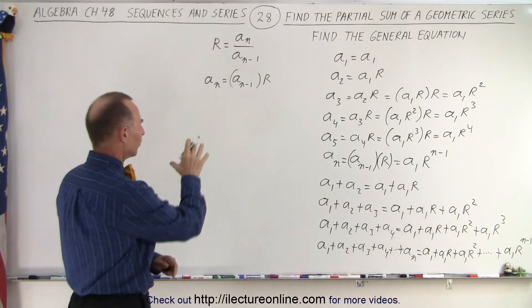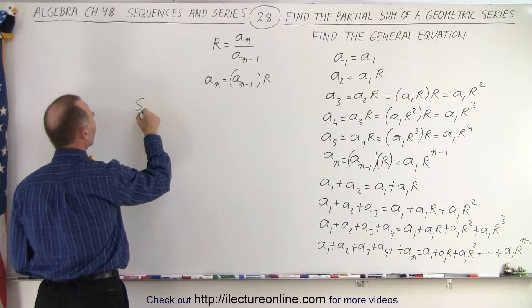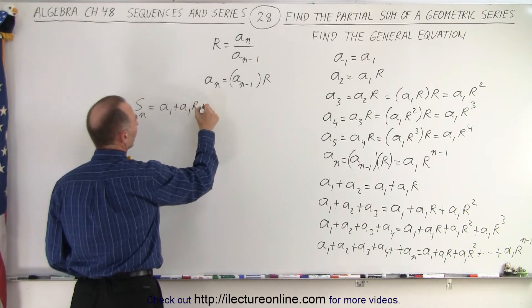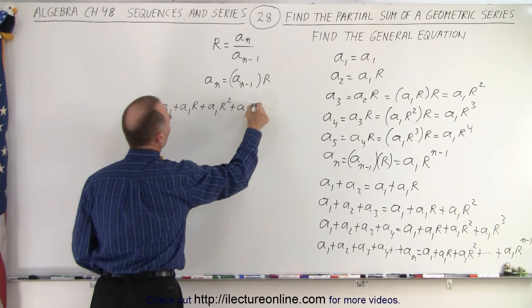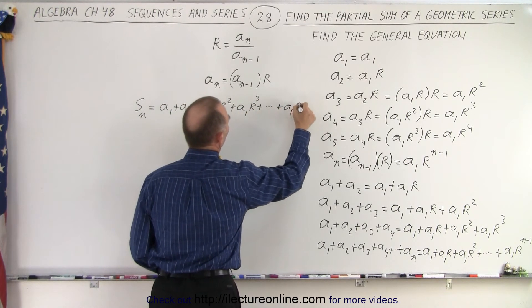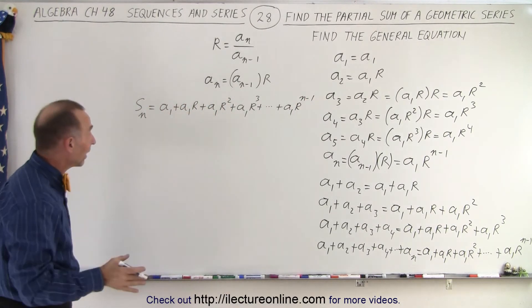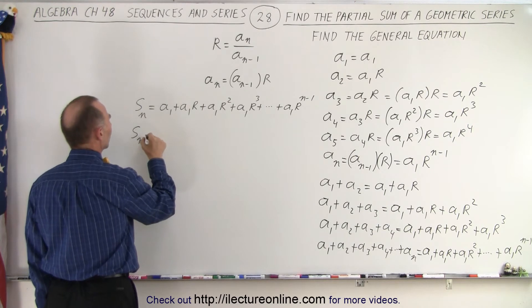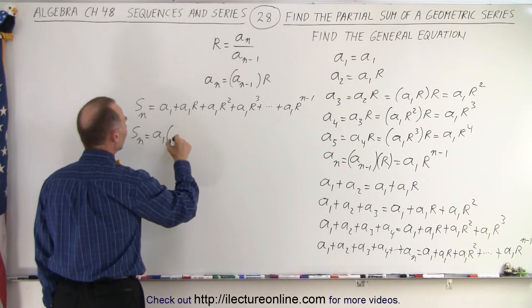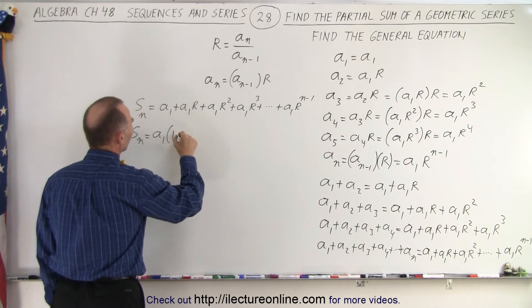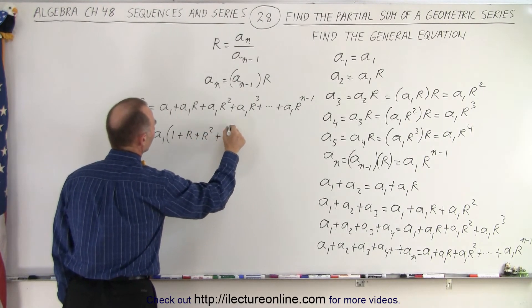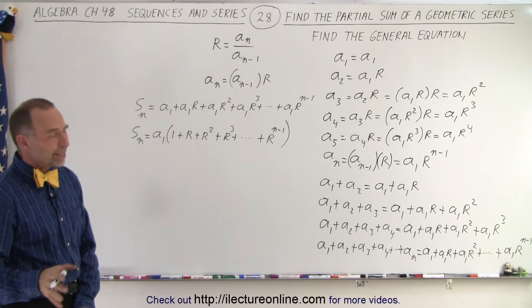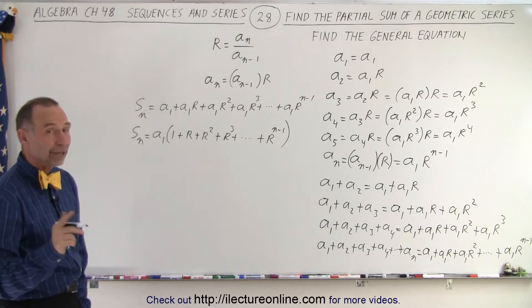Now let's put that together. The sum of the first n terms S sub n is equal to a sub 1 plus a sub 1 r plus a sub 1 r squared plus a sub 1 r cubed, all the way up to a sub 1 r to the n minus 1. Since every term has an a sub 1 in it, we can factor out an a sub 1, giving us a sub 1 times the quantity 1 plus r plus r squared plus r cubed, all the way to r to the n minus 1.